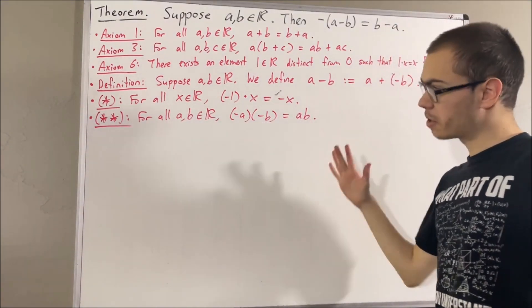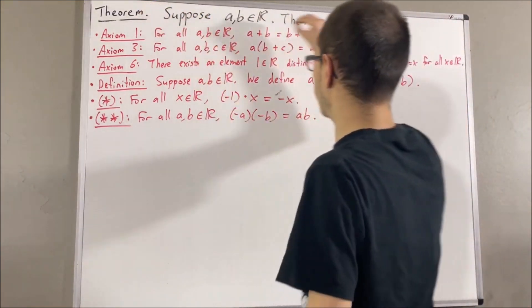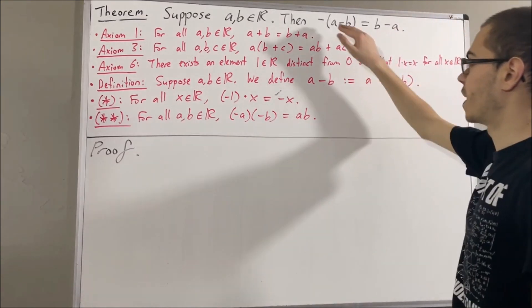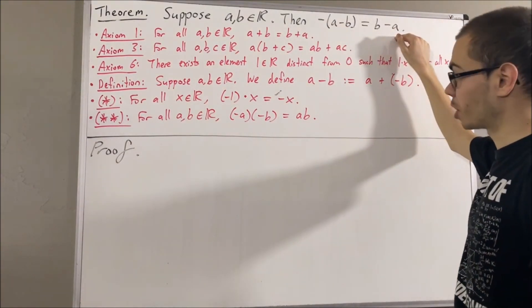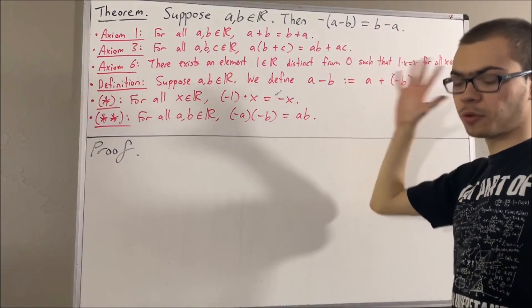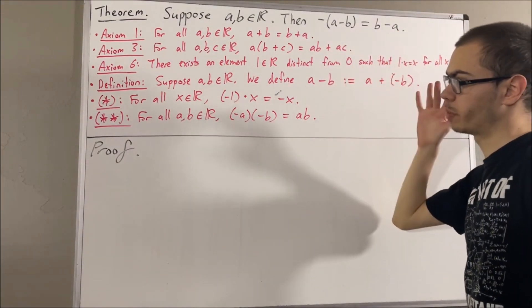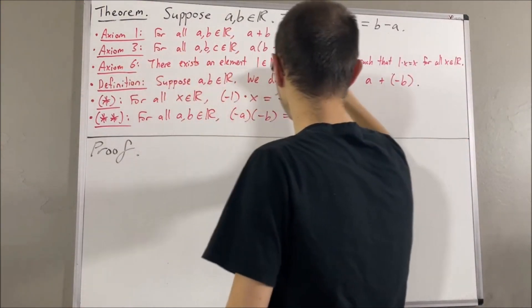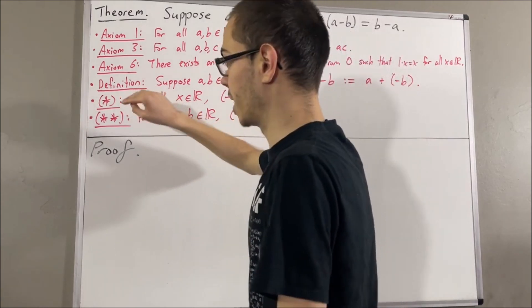Okay, so now let's get into proving this theorem. Now we're trying to prove that these two guys are equal. And we are going to establish that these two guys are equal through a chain of equalities. And through that chain of equalities, we are going to be applying axioms 1, 3, and 6, the definition of subtraction, star and star star.